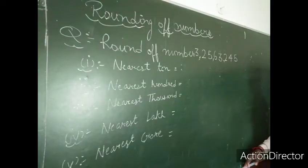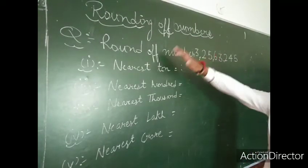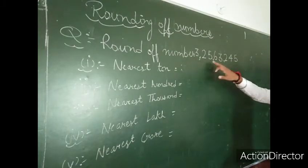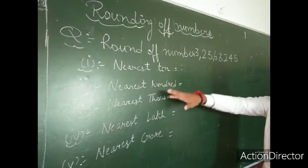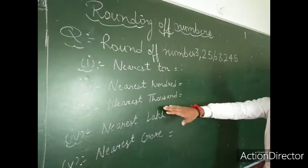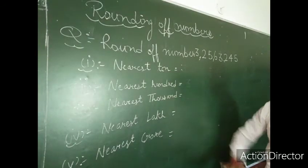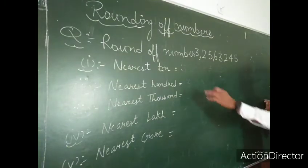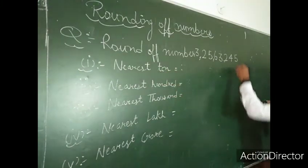Now students, here we take some questions related to rounding off numbers. Round off the number 3 crore 25,63,245 to nearest 10, nearest 100, nearest 1000, nearest lakh, and nearest crore. Let's see how we round off these numbers. First, we take the round off to nearest 10.